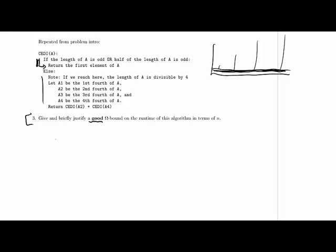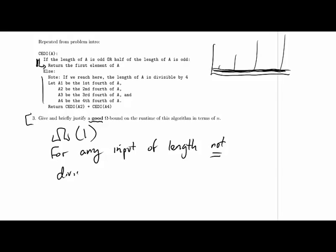So we can say our omega bound is omega 1, constant time. And we can say that the reason why is because for any input of length not divisible by 4, the runtime is constant.